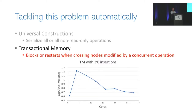A graph shows the scalability of a tree converted using a transactional memory system, with 97% lookups and 3% insertions over increasing numbers of working cores. Even though transactional memory is supposed to be optimistic, it blocks and restarts when mixing insertions, and the scalability degrades dramatically.